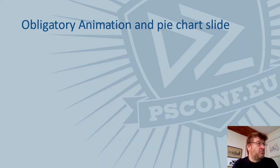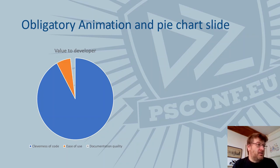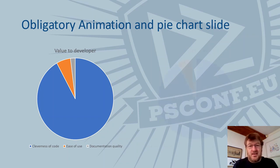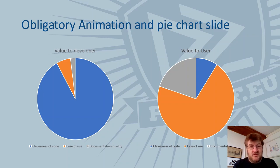A bit of context: if you talk to developers, most of the value they see is in how clever their code is — about 90% of the pie chart. Only about six or eight percent is ease of use and documentation quality. But everybody else cares ten times more about documentation, and cares about clever code only a tenth as much. The difference is ease of use — ease of use is everything to the people we're writing scripts for.